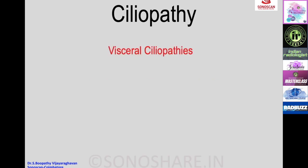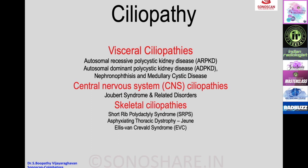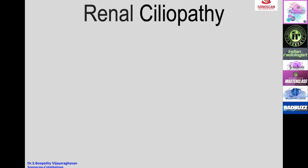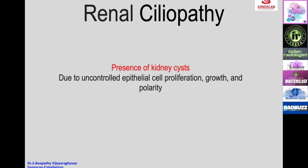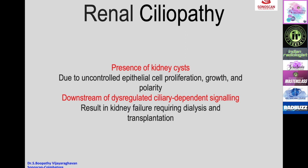Ciliopathy can manifest mainly as visceral ciliopathies, central nervous ciliopathies such as Joubert syndrome and related disorders, skeletal ciliopathies such as short rib polydactyly syndrome, asphyxiating thoracic dystrophy, Lisvan-Krival syndrome, and ciliopathy syndromes such as oral-facial-digital syndrome. Renal ciliopathy is characterized by the presence of renal cysts due to uncontrolled epithelial cell proliferation, growth, and polarity.